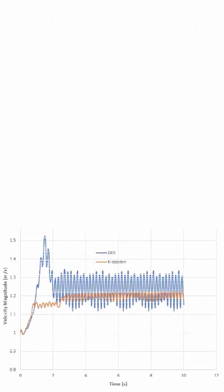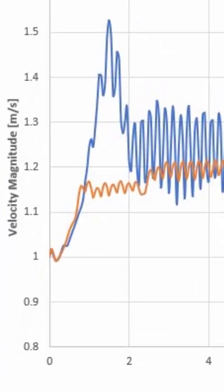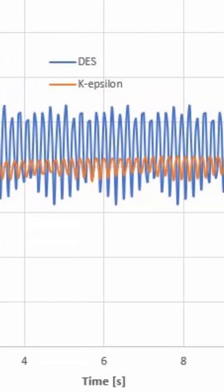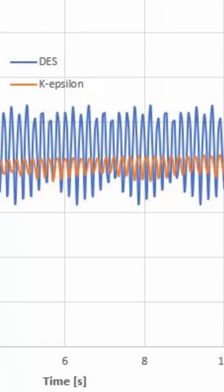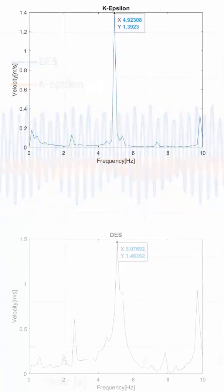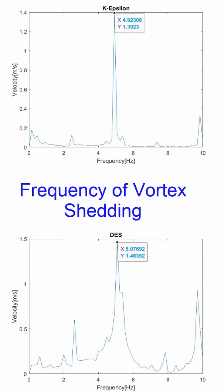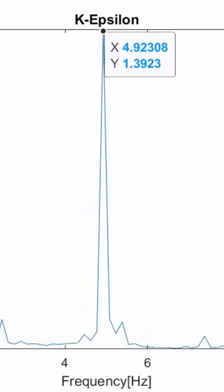The velocity fluctuation generated by both models is plotted as a graph. The magnitude of the fluctuation is greater in DES. However, the frequency of the velocity fluctuation, or the frequency of vortex shedding, is almost the same in both models.